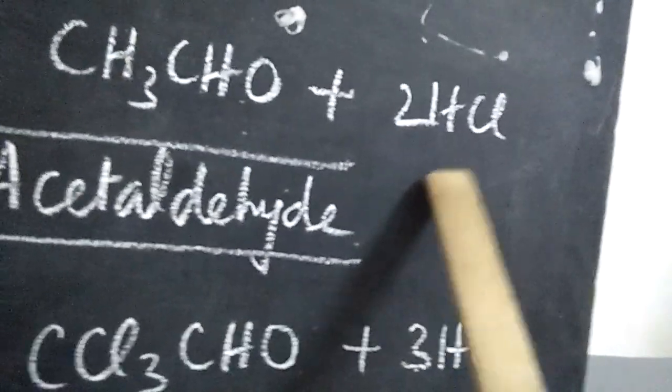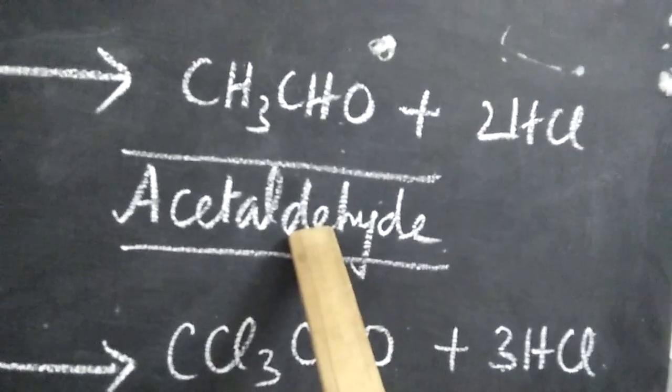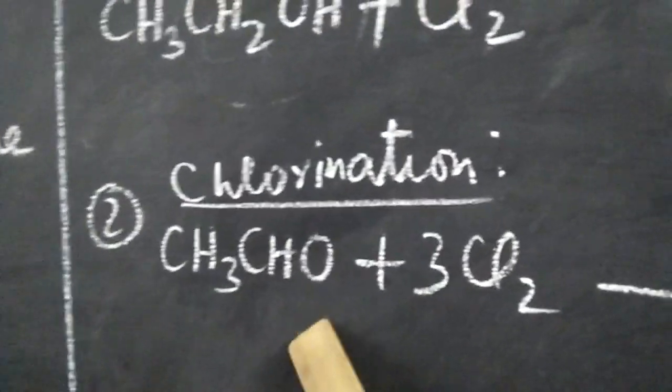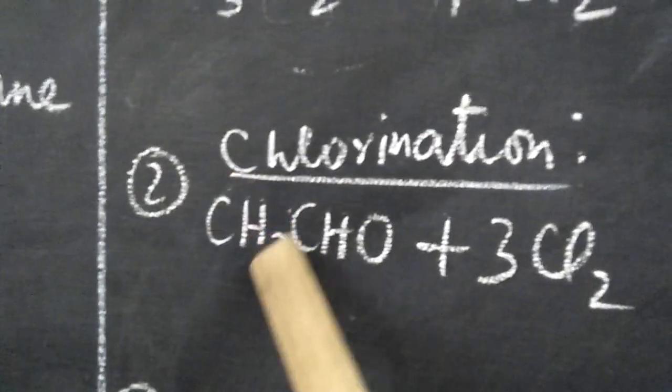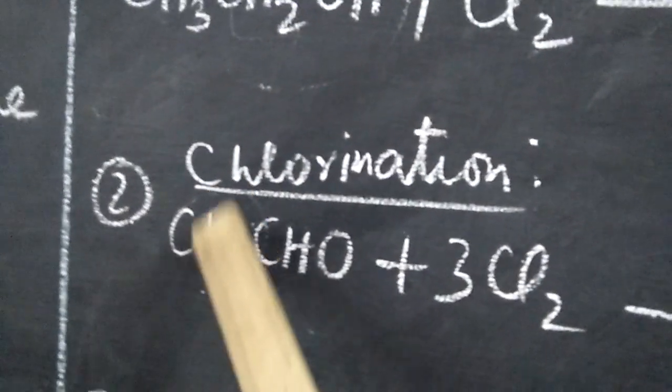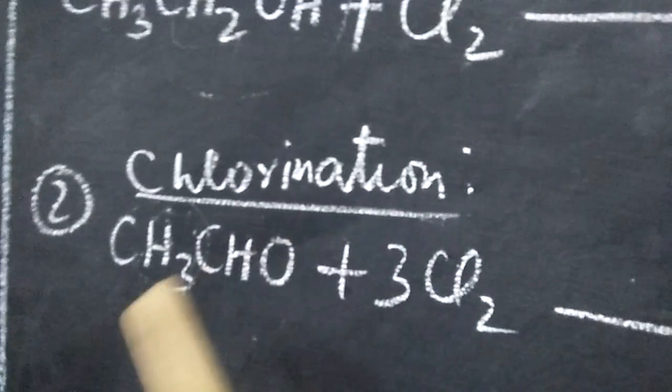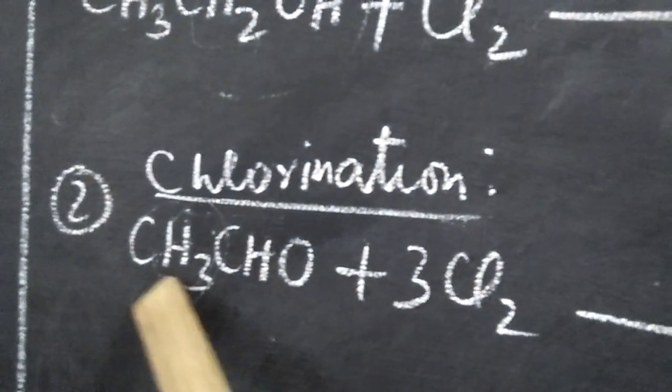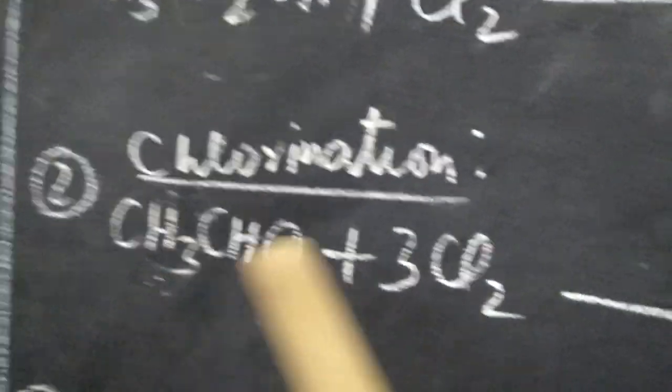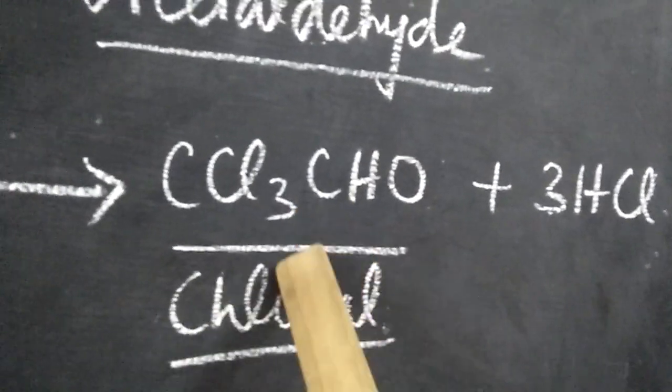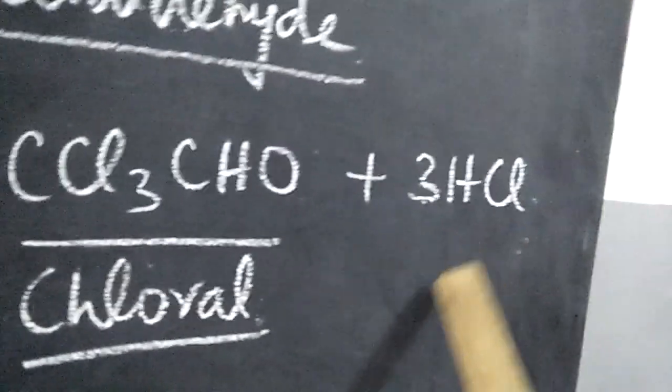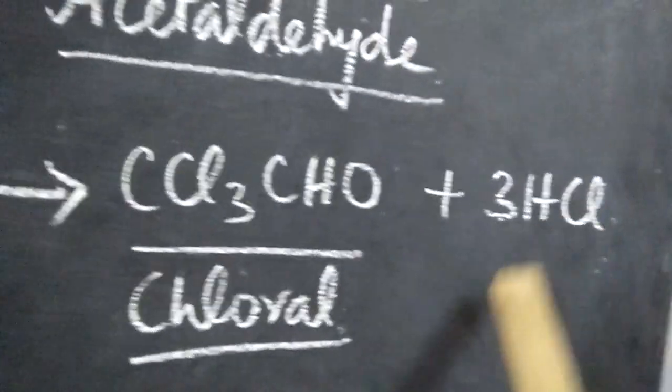Next, this acetaldehyde further gets chlorinated with the excess of chlorine. These three hydrogen atoms enter for substitution now. It is called chlorination. Three hydrogen atoms are removed. The alpha hydrogen atoms are substituted by three chlorine atoms. So you get CCl3CHO, chloral. Chloral is trichloroacetaldehyde plus HCl is the byproduct.